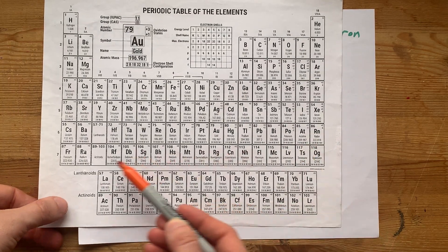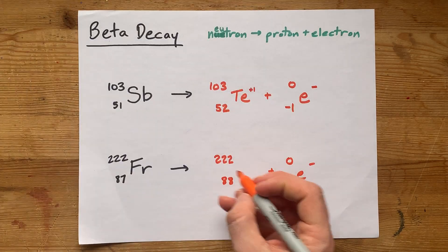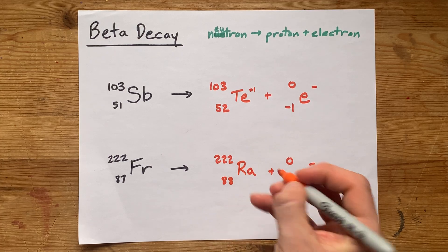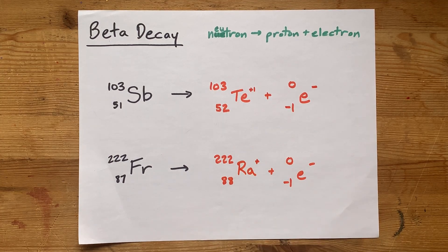Now, we've got to look up number 88 on the periodic table. It's Ra for radium. And again, depending on your teacher, they may want you to show the plus sign to show the charge balance.